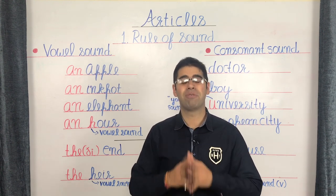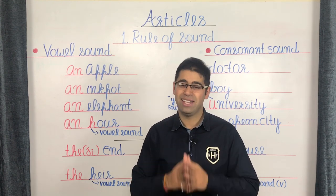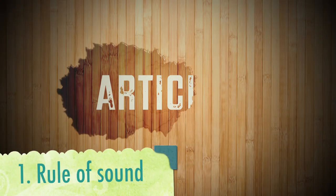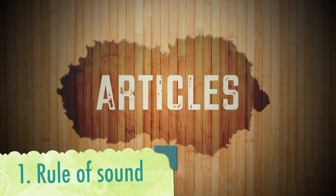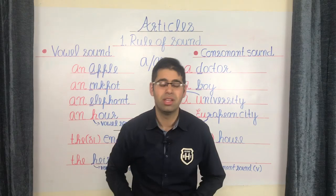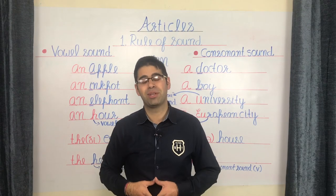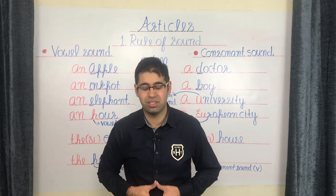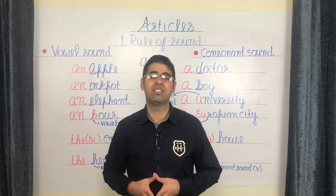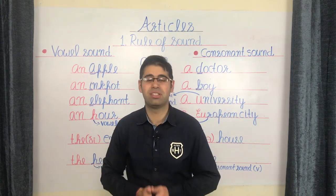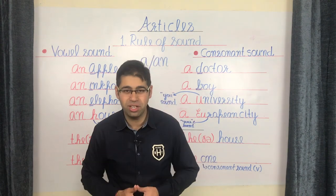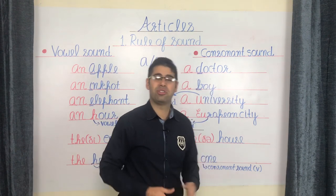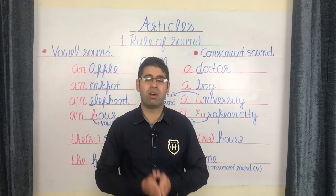So let's begin with the first rule, that is the rule of sound. Let's begin with this simple yet crucial rule. Now it's common knowledge that in language there are essentially two types of sound: the vowel sound and the consonant sound.